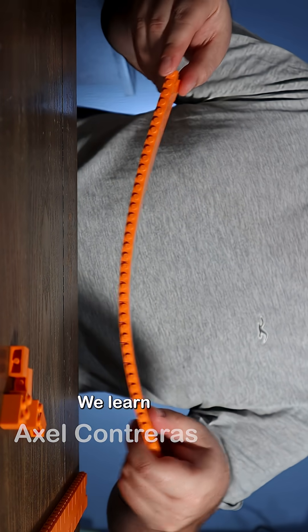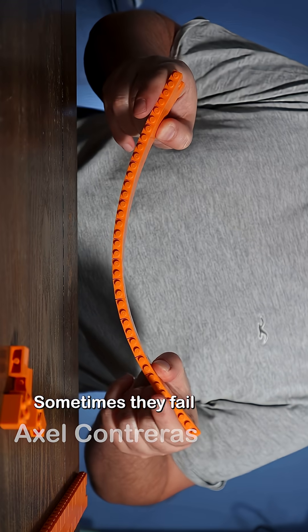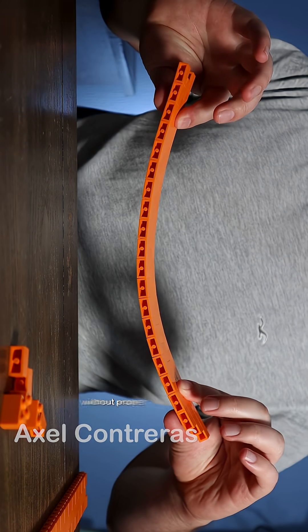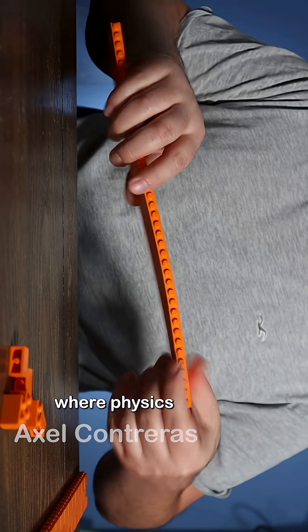With LEGOs, we learn that beams don't fail just because they're weak. Sometimes they fail simply because they're too long without proper support, and that's where physics becomes tangible.